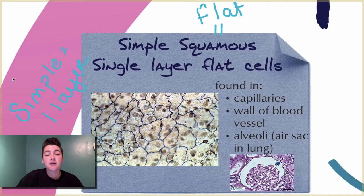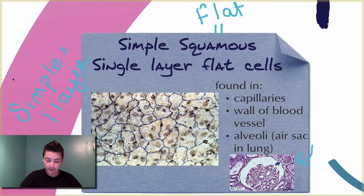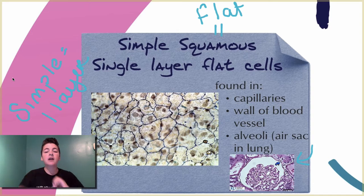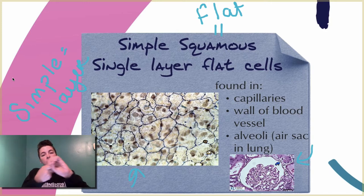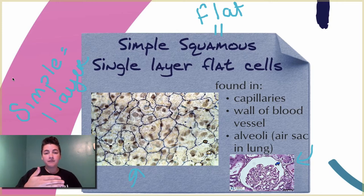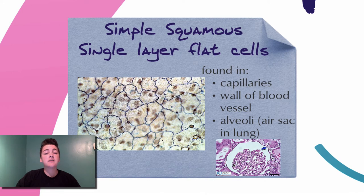Simple squamous cells are most commonly found in capillaries, walls of blood vessels, and in the alveoli, which are the air sacs within the lung. We have two different pictures here. One at the bottom is as if you're looking at the tube from the outside, so you're looking at the rim of the tube. The main picture is as if you're looking inside the tube, looking at the wall. The simple squamous cells tend to have large nuclei — the brown spots are the nuclei.